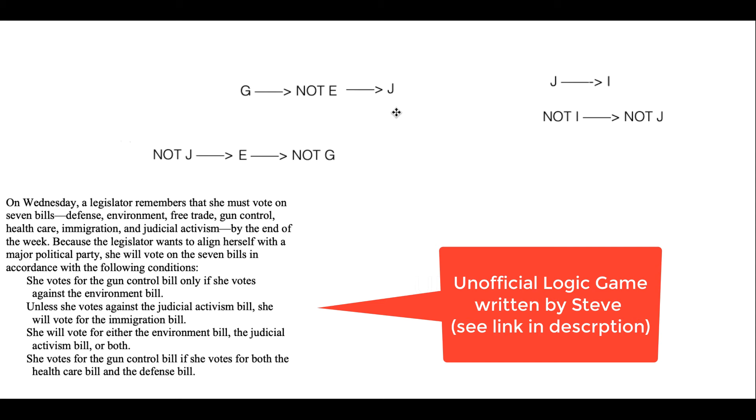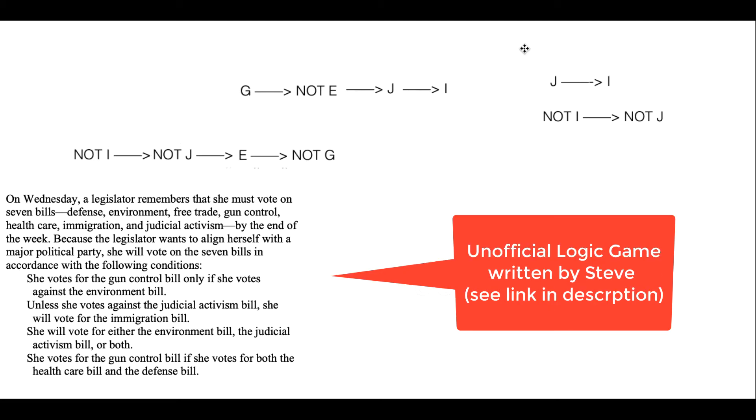Okay. And then, so yeah, so then you can add I to the top one. Excellent. So now we have J on our main diagram, so we can link in the J-I rule. So J requires I and contrapositive would be what? To add not I before not J. Perfect. So not I requires not J. So those link in very smoothly.